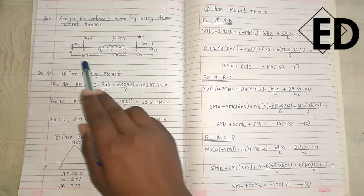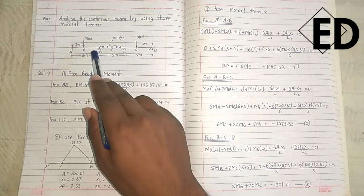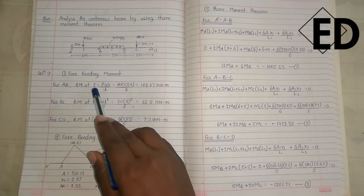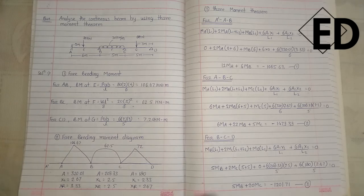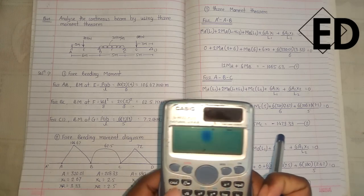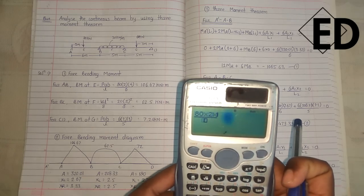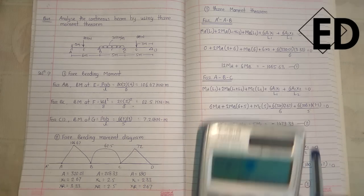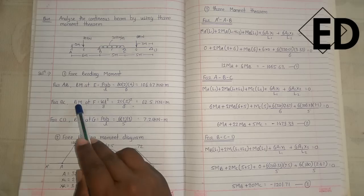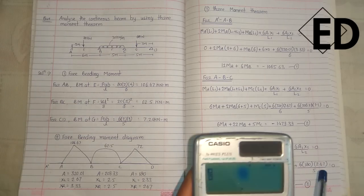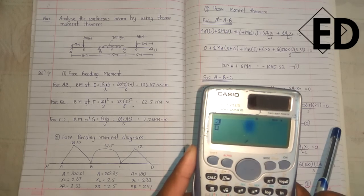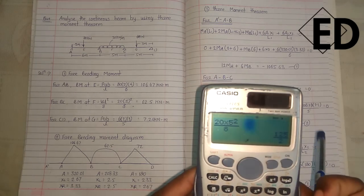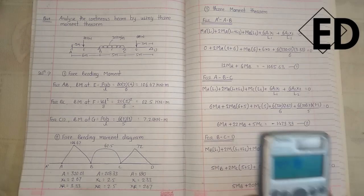Here we have span AB, span BC, and span CD. For span AB, the bending moment at E equals PAB by L. By putting the values, we get 16.60 kN. For span BC, the bending moment at F equals WL² by 8. By putting the values W and L² by 8, we get 16.2 kN.